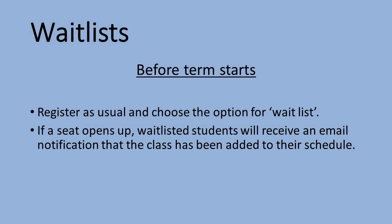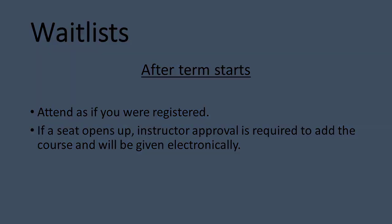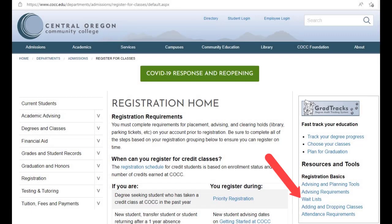Returning to the subject of waitlists: if you are waitlisted for a course, don't panic. Before the term starts, you can register as usual and choose the option for waitlist. If a seat opens, you'll receive an email notification that the class has been added to your schedule. Be sure to have a plan B, though, as you are not necessarily guaranteed to get into a waitlisted course. After the term starts, attend the course as if you were registered. Instructor approval will be required to add the course, and that will be given electronically. You can find more information about waitlisting on the COCC website.